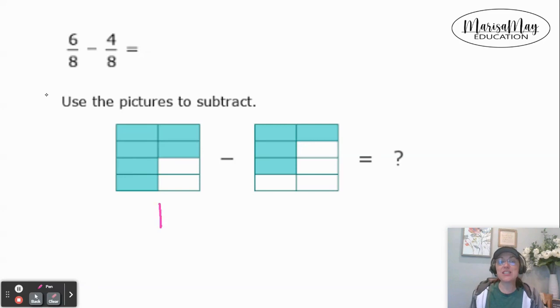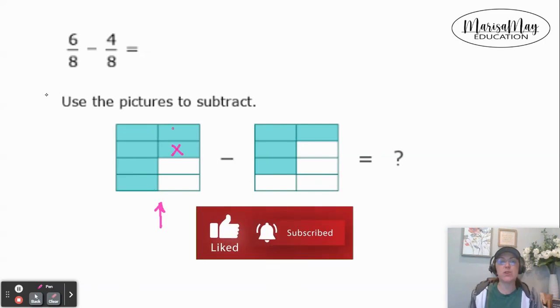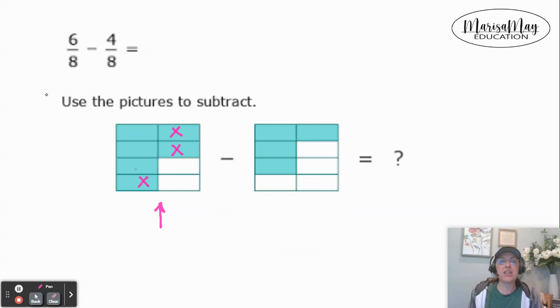So if I start with the 6 eighths here on the left and I take away the 4 eighths - 1, 2, 3, 4 - then how many are left?